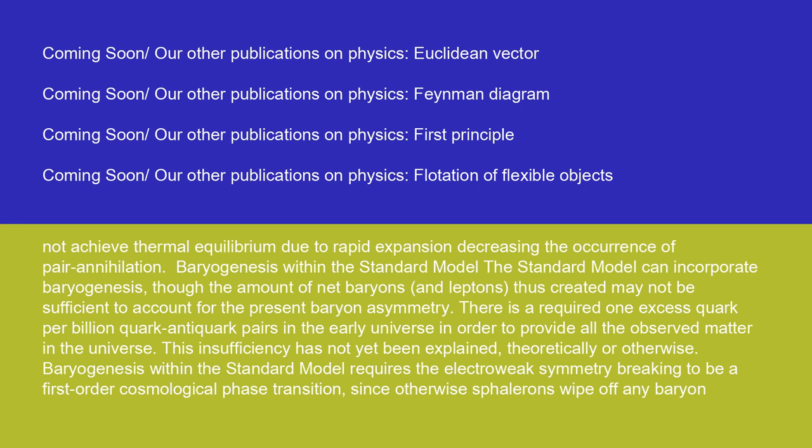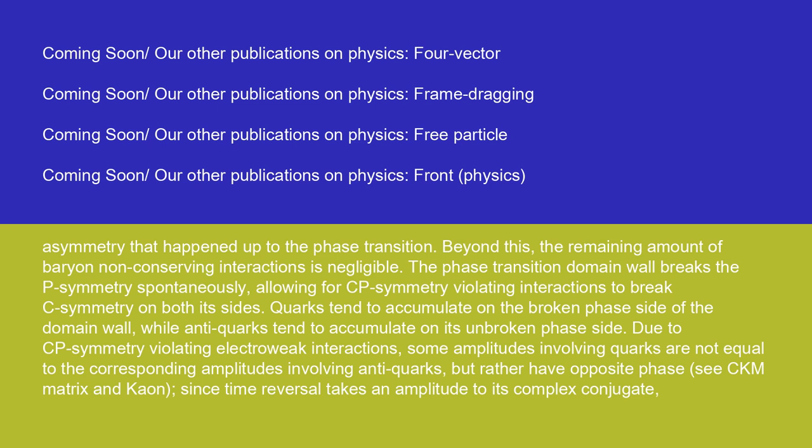Baryogenesis within the standard model can incorporate baryogenesis, though the amount of net baryons and leptons thus created may not be sufficient to account for the present baryon asymmetry. There is a required one excess quark per billion quark-antiquark pairs in the early universe in order to provide all the observed matter in the universe. This insufficiency has not yet been explained, theoretically or otherwise. Baryogenesis within the standard model requires the electroweak symmetry breaking to be a first-order cosmological phase transition, since otherwise sphalerons wipe off any baryon asymmetry that happened up to the phase transition. Beyond this, the remaining amount of baryon non-conserving interactions is negligible.